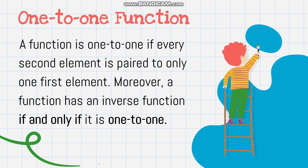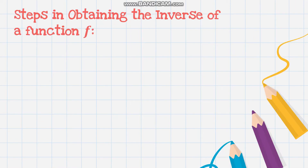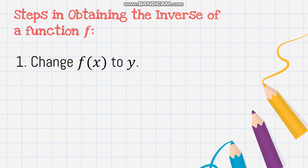Recall that we discussed one-to-one functions. It is a one-to-one function if every second element is paired to only one first element. A function has an inverse function if and only if it is one-to-one. So for a one-to-one function, there is only one value of x for every one value of y, which means it automatically has an inverse function.